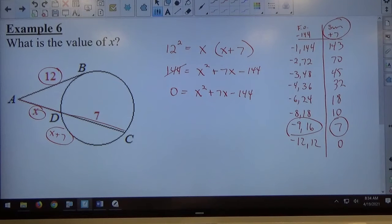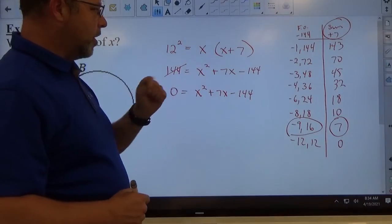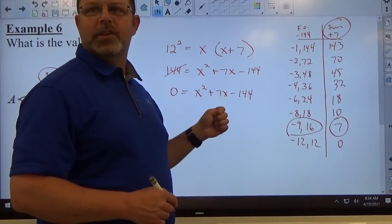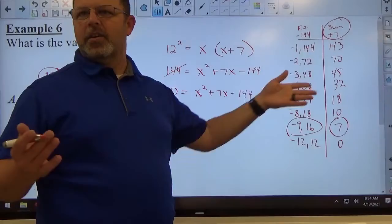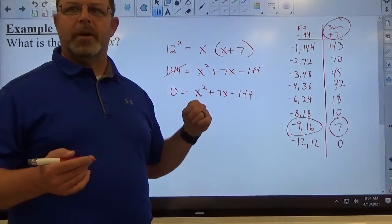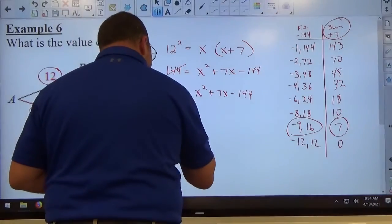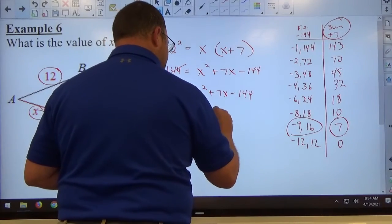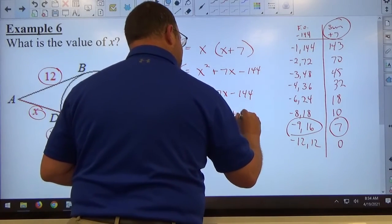So use the chart if necessary, but if as soon as you say hey I bet you negative 9 and 16 is the right pair and it is, then don't feel like you have to do the whole chart if you already figured out the pair of numbers. So 0 equals x minus 9 times x plus 16.